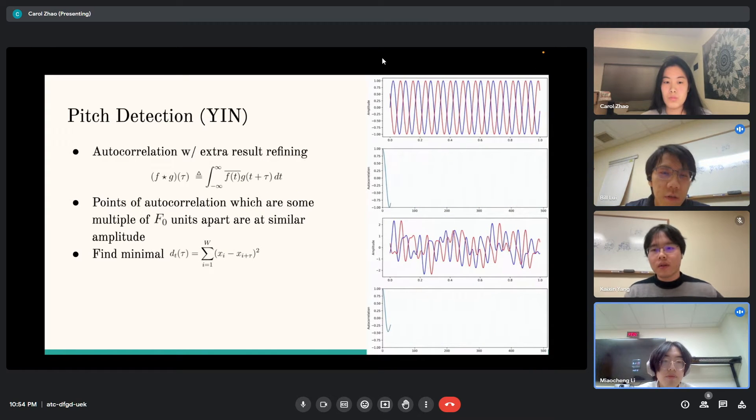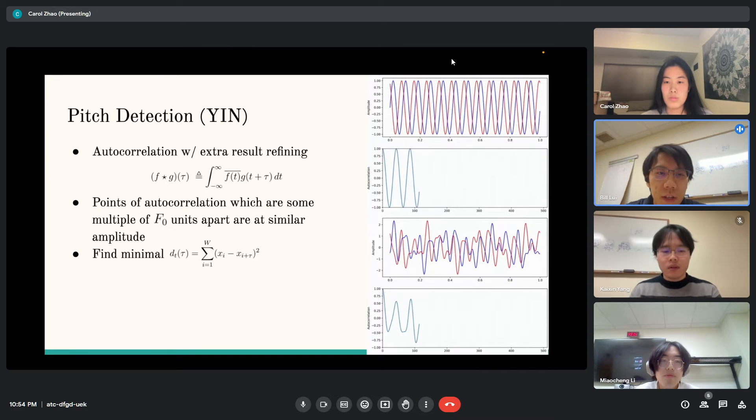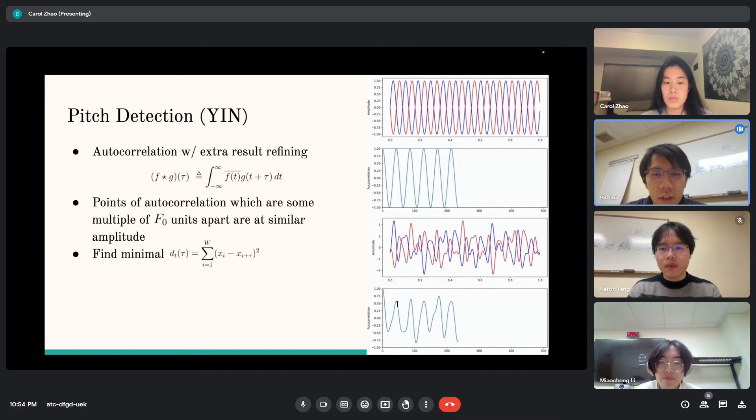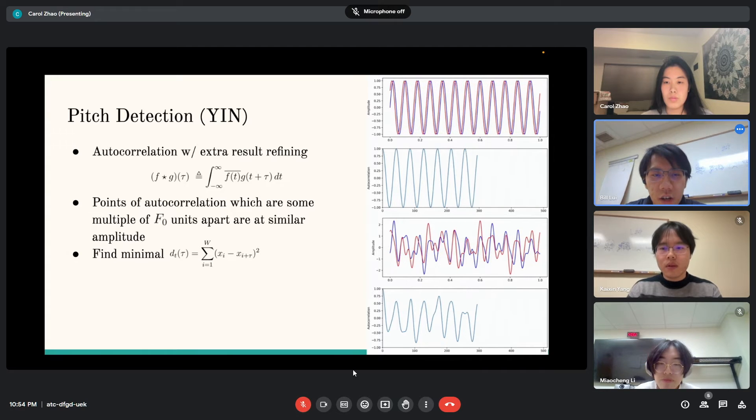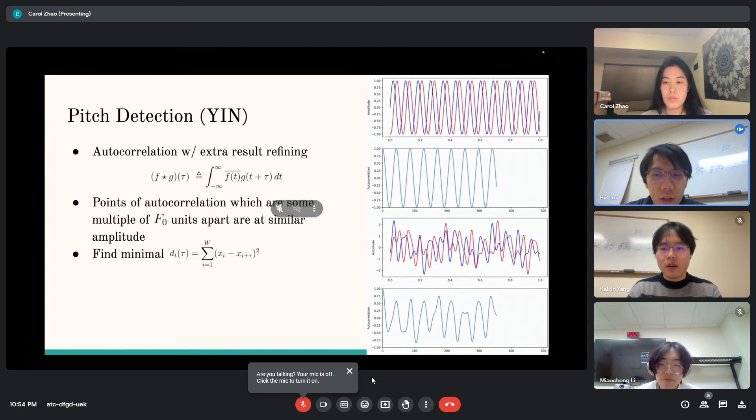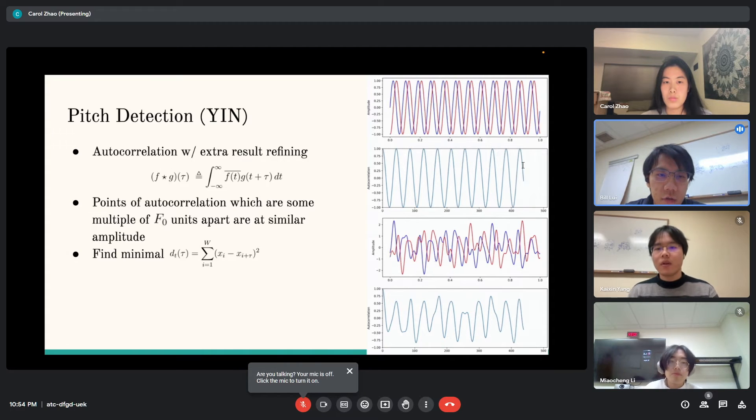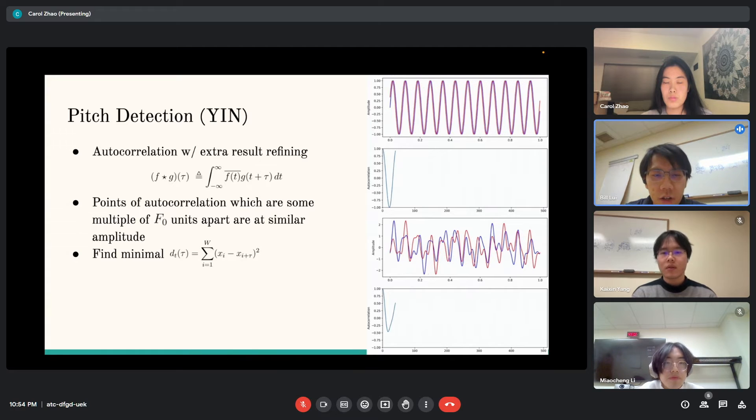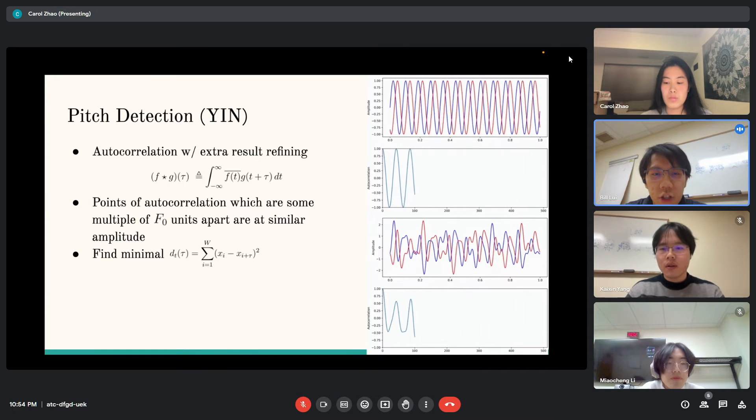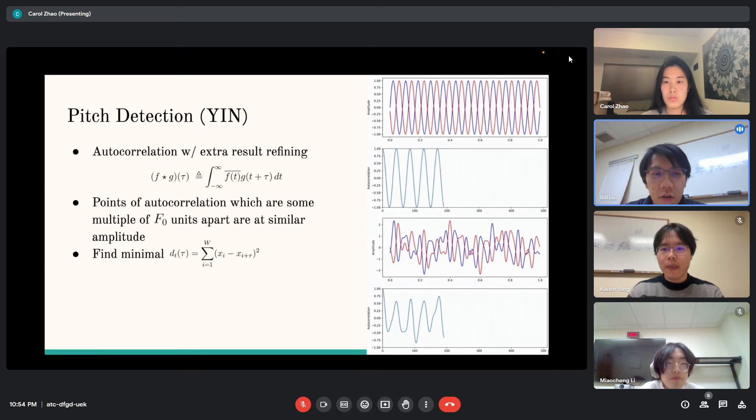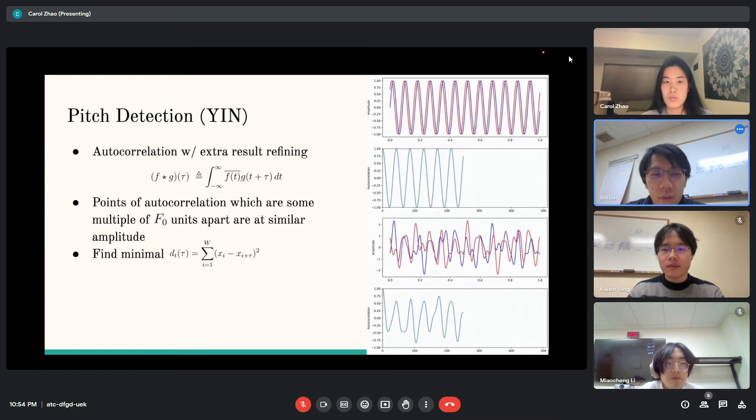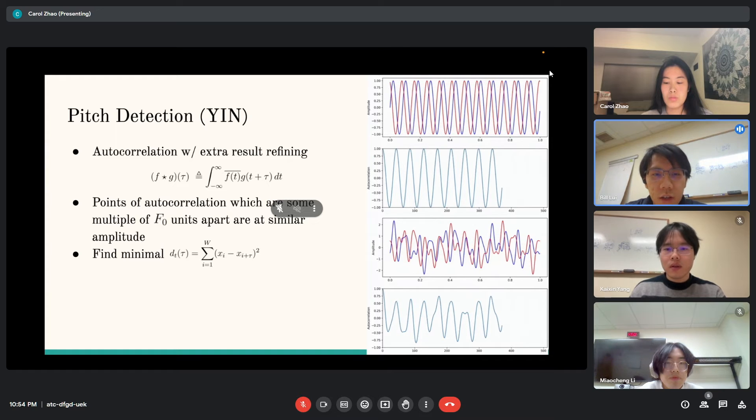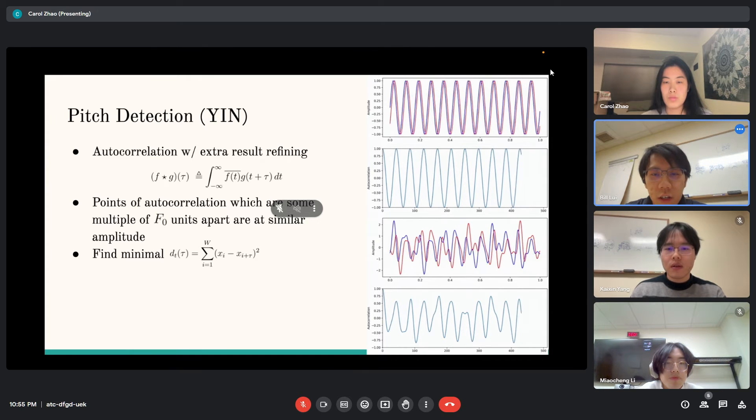For our pitch detection, we explored two different methods. The first one is the YIN method, which uses autocorrelation and then filters the signal to get a better refined answer. Autocorrelation is defined by the equation where it is the integral from negative infinity to infinity of the complex conjugate of f multiplied by the function g shifted by some tau. In our case, since it's autocorrelation, both functions f and g are the same signal, and because they're both real, the complex conjugate has no effect.